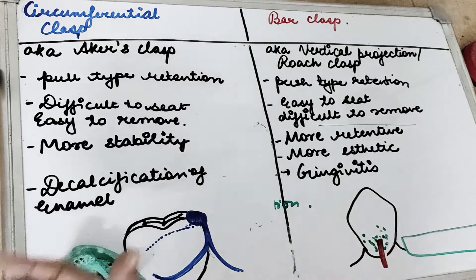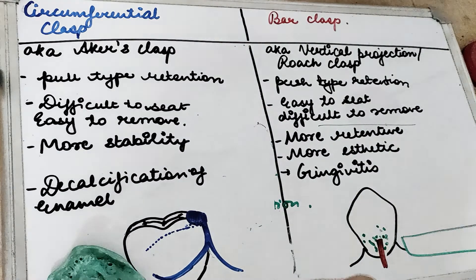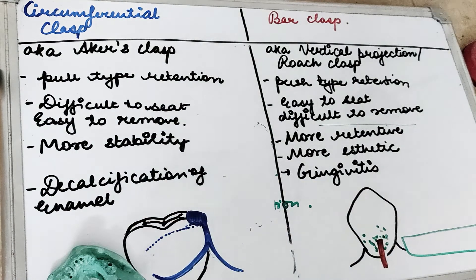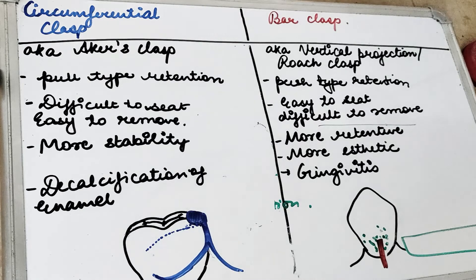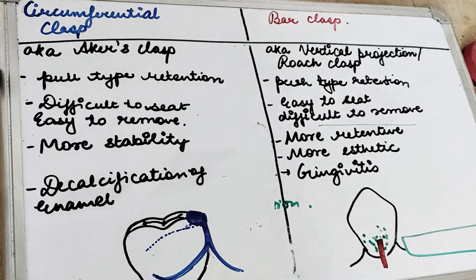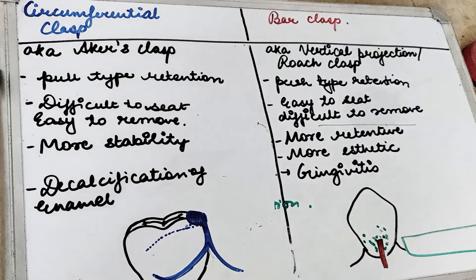So guys, this is the difference between a circumferential clasp and the bar clasp. I hope that you have enjoyed the video. If you have enjoyed it, give it a thumbs up and comment below. There is a link in the description box to support me on Paytm and PayPal to make free videos and free notes. Till then, keep reading, keep learning, stay motivated, and see you soon in the next video.